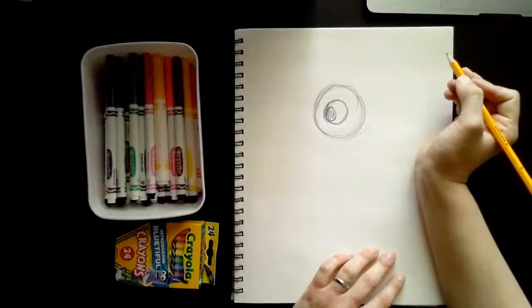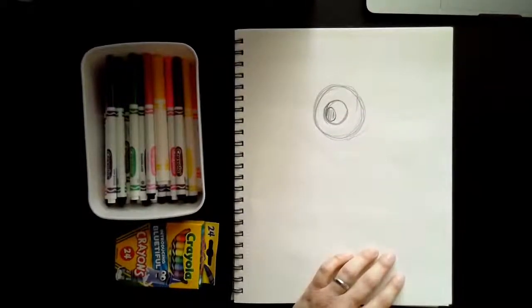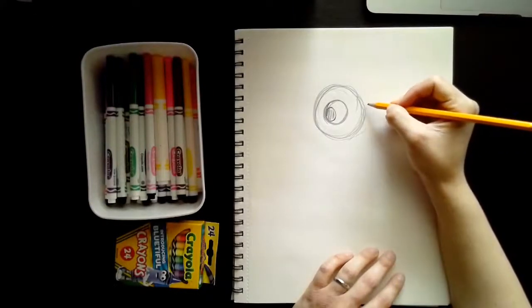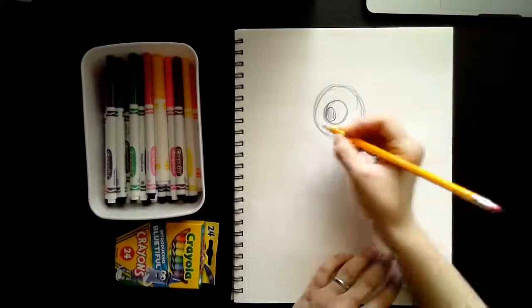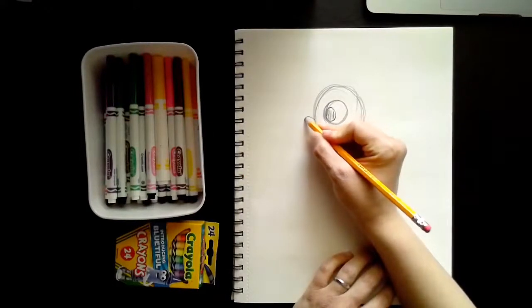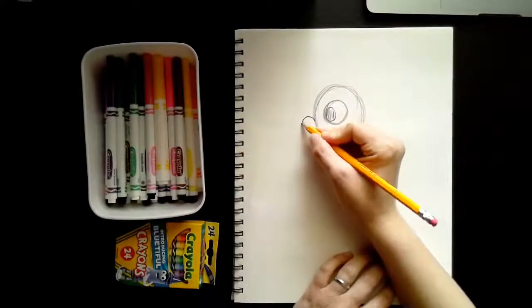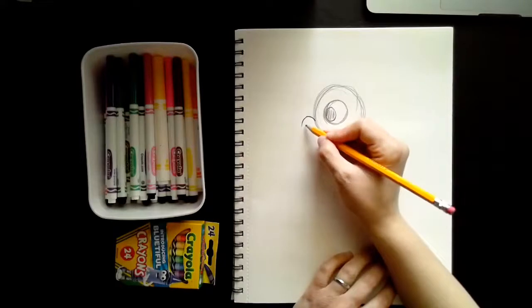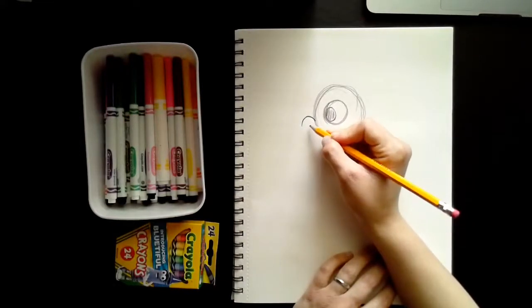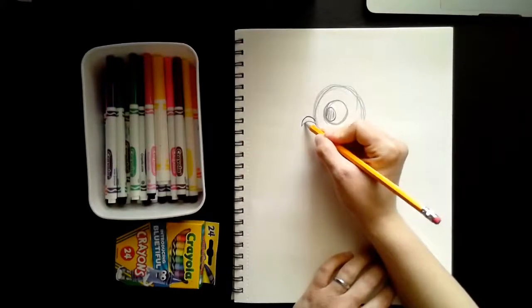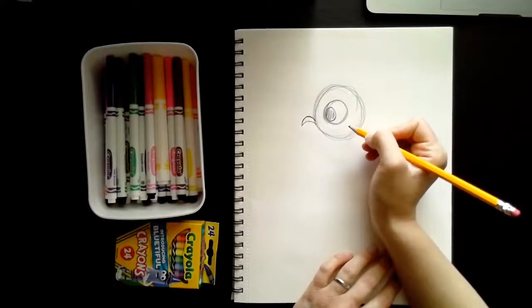Now, the tricky part is pigeon's beak. Pigeon has two parts to his beak, the top part and the bottom part. The top part's a little bit bigger. So I'm going to go ahead and draw the top part of his beak. I'm going to make a rainbow, a little rainbow that comes right out of the circle of his head. And now we're going to draw a smaller rainbow on the inside of that. So I'm going to start right here and make a smaller rainbow.